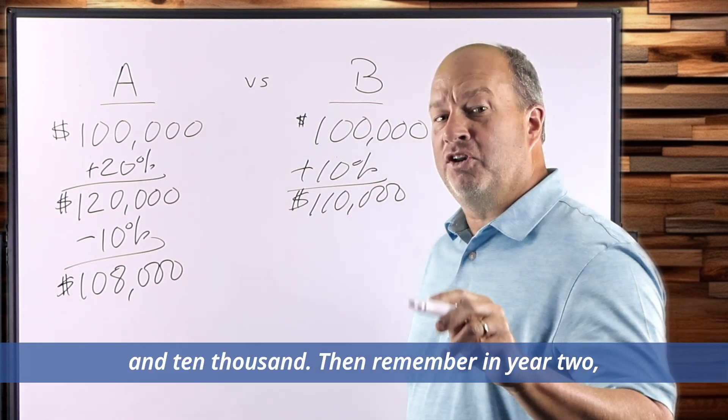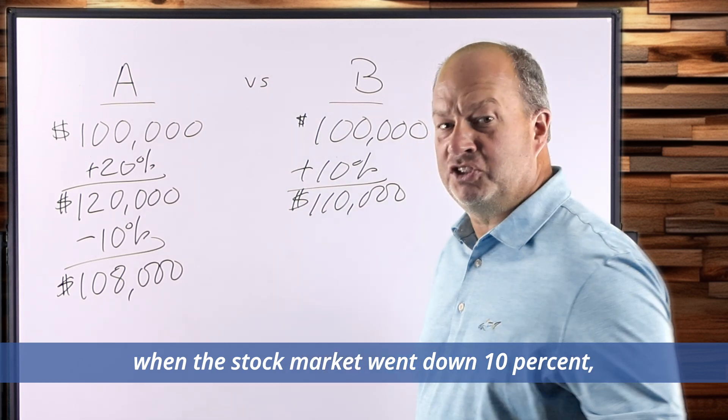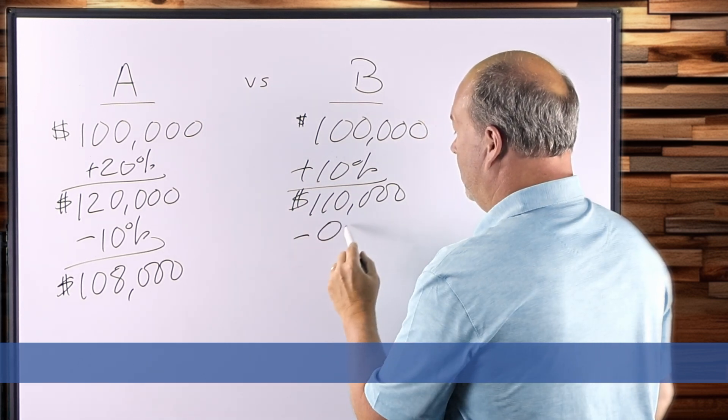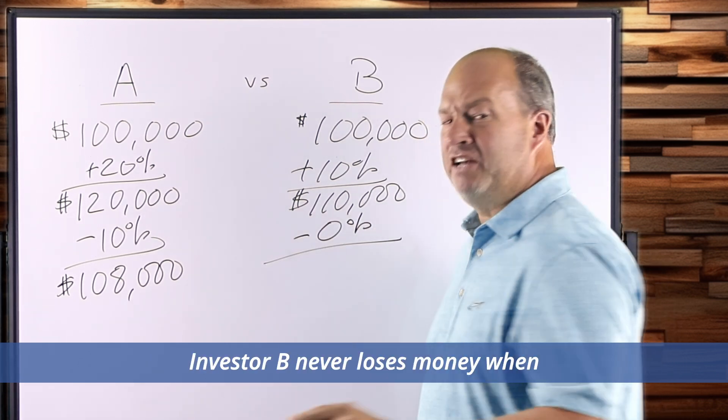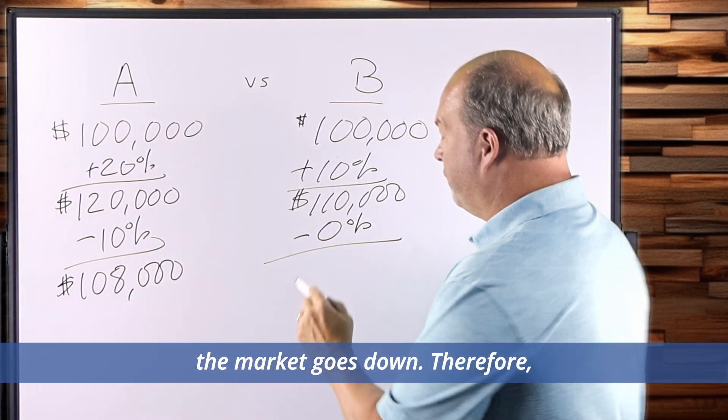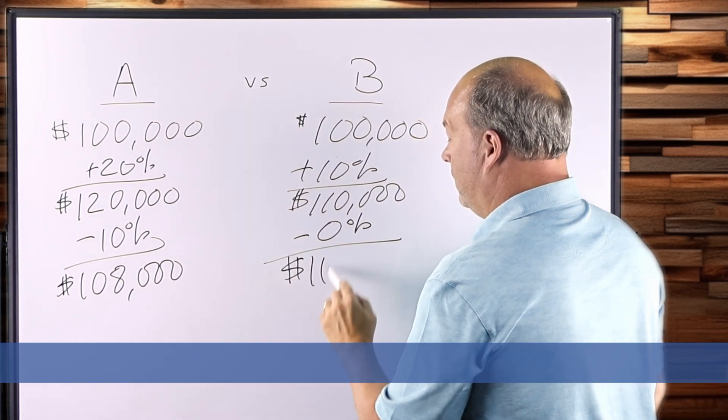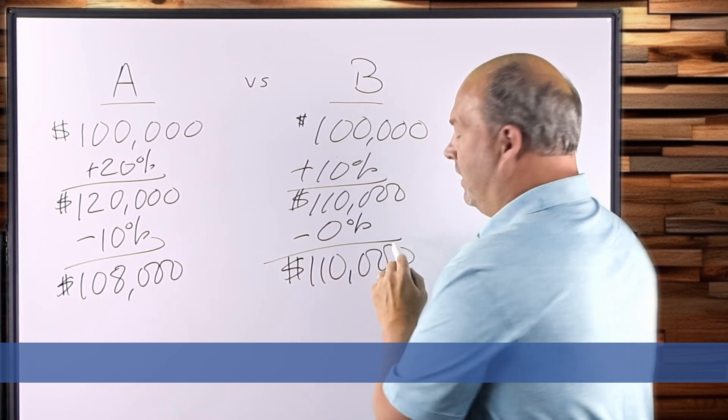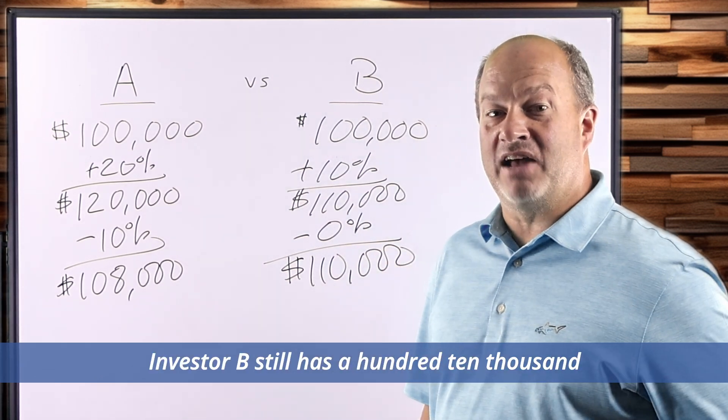Then remember in year two, when the stock market went down 10%, Investor B never loses money when the market goes down. Therefore, Investor B still has $110,000.